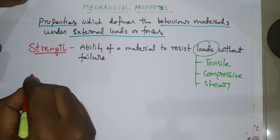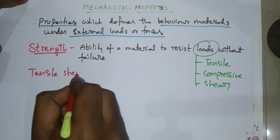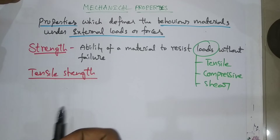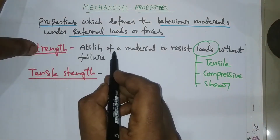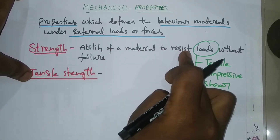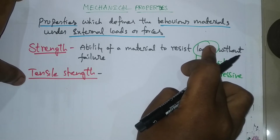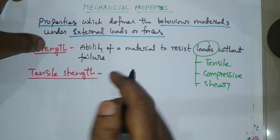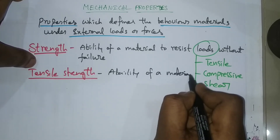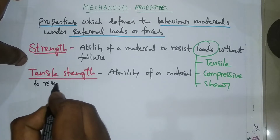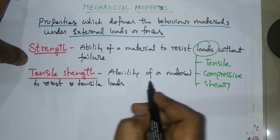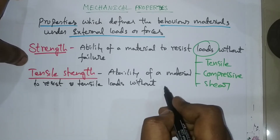The first one is tensile strength. Definition: the ability of a material to resist tensile loads without failure.